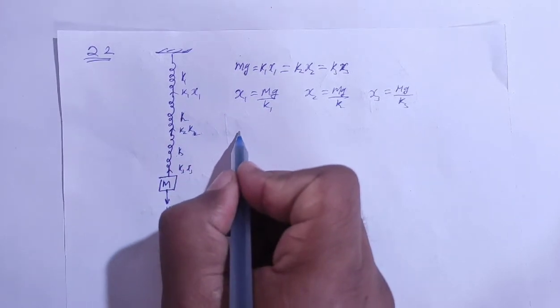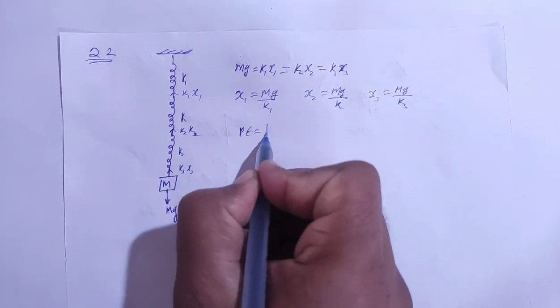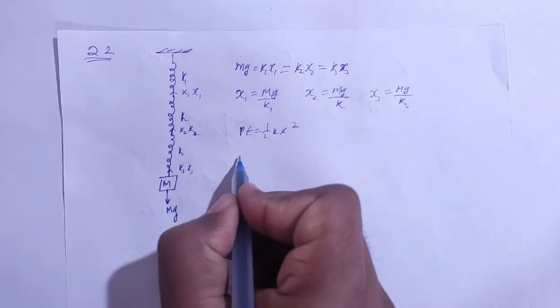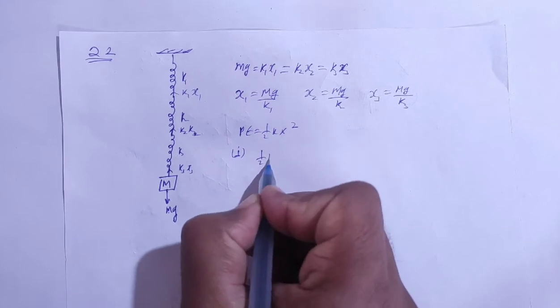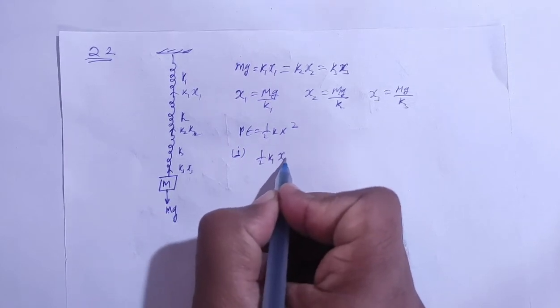Now, how much potential energy will develop in the spring? We write potential energy as half kx square. So if we talk about the first spring, potential energy developed will be half k1 x1 square.